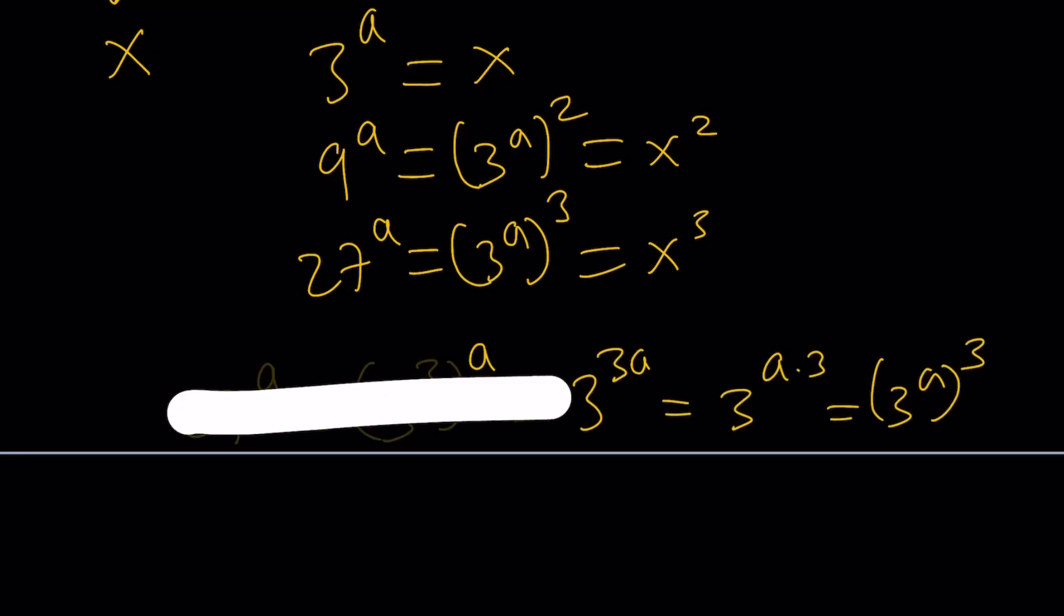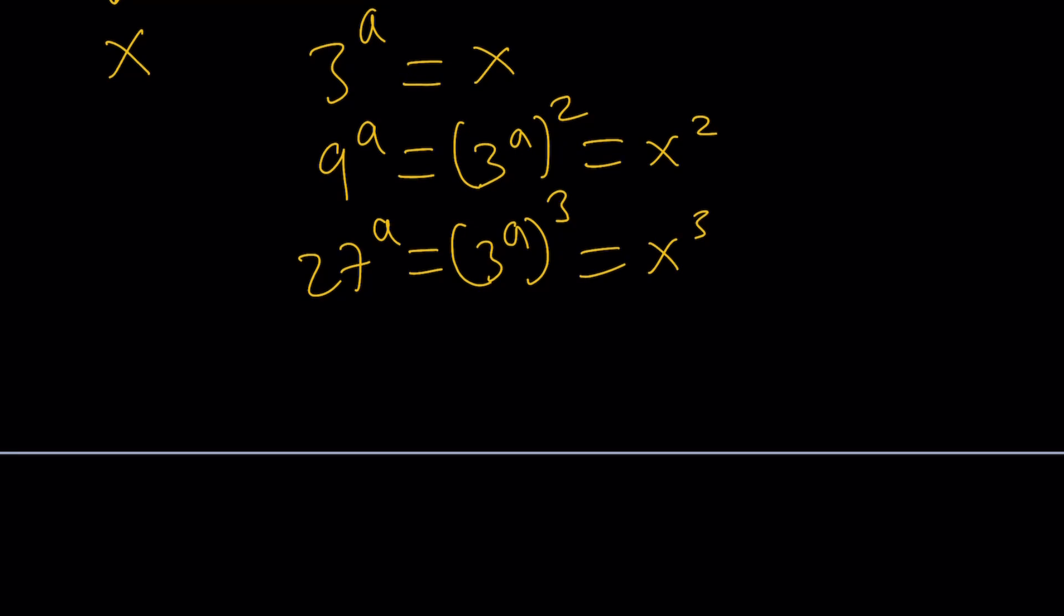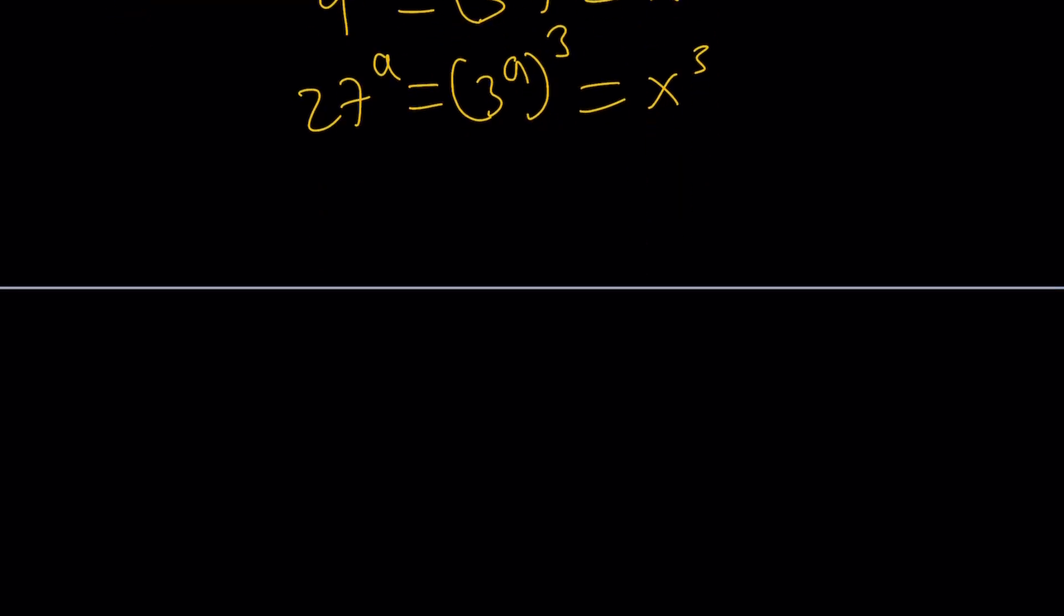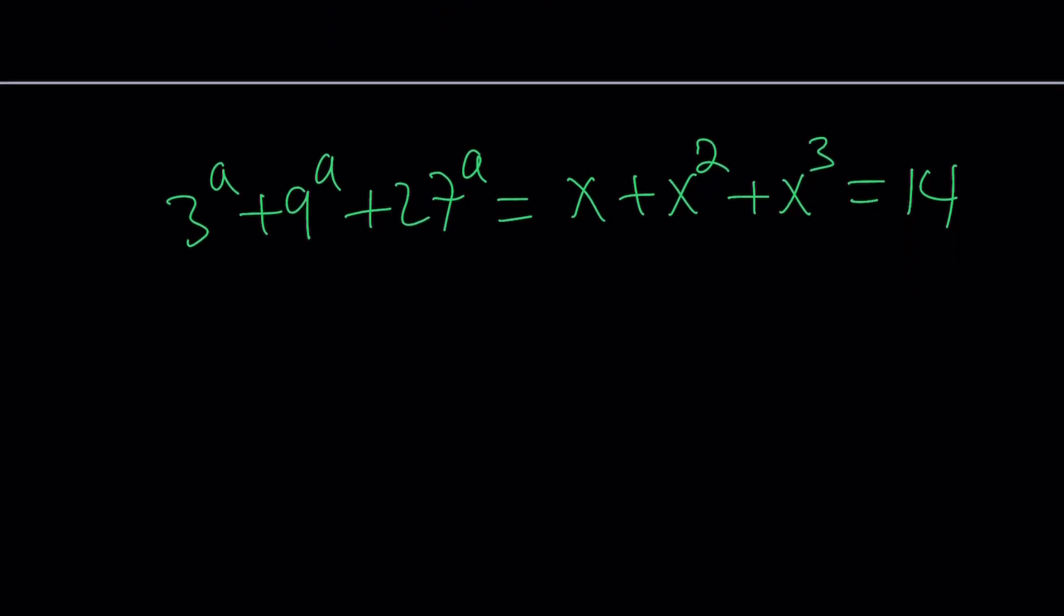So now, here's what we're going to do. We're going to put it all together. What do we have in our equation? We have 3 to the a plus 9 to the a plus 27 to the a, which is equivalent to x plus x squared plus x to the third. And we know that it's equal to 14. The fact that we use substitution here doesn't change the fact that our expression is equal to 14, because 14 is constant. That's what's nice about constants. They don't change.